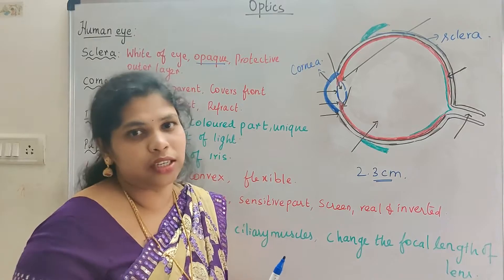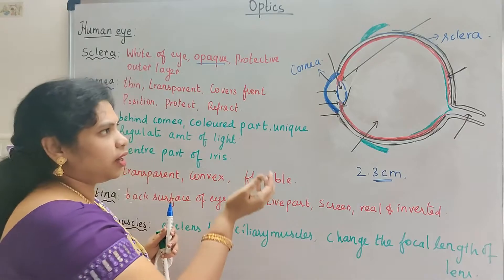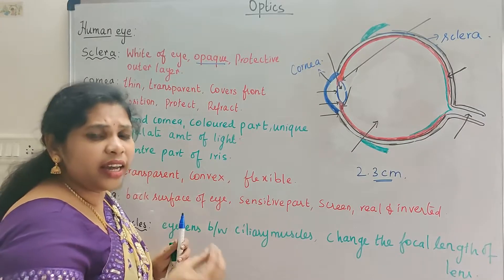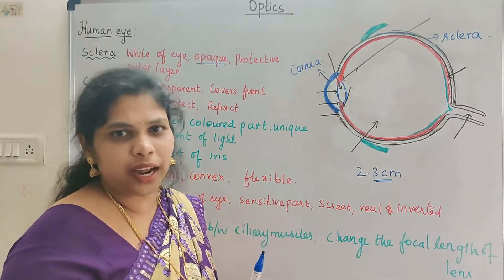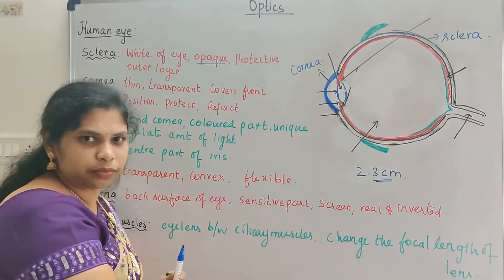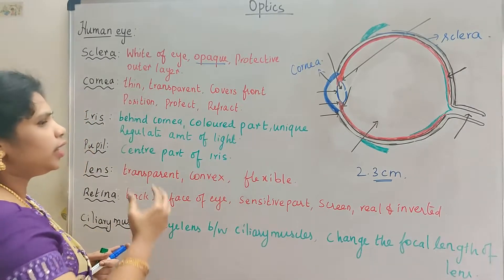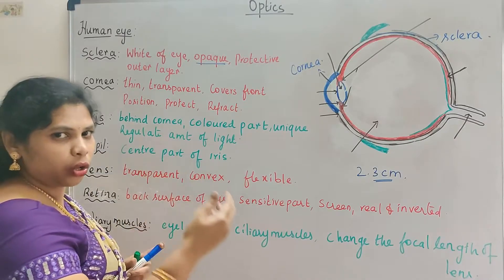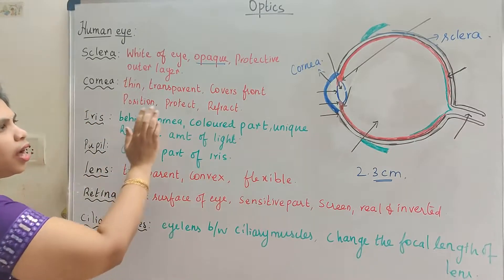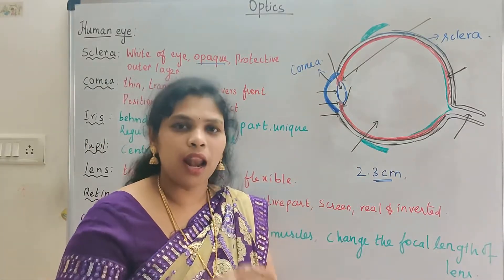The cornea refracts the light. When we look at objects, it bends the light rays — this is the cornea. So the cornea is thin and transparent, which allows the light to pass through it. It covers the iris and the pupil, and it protects from infections. The main function is to refract the light.